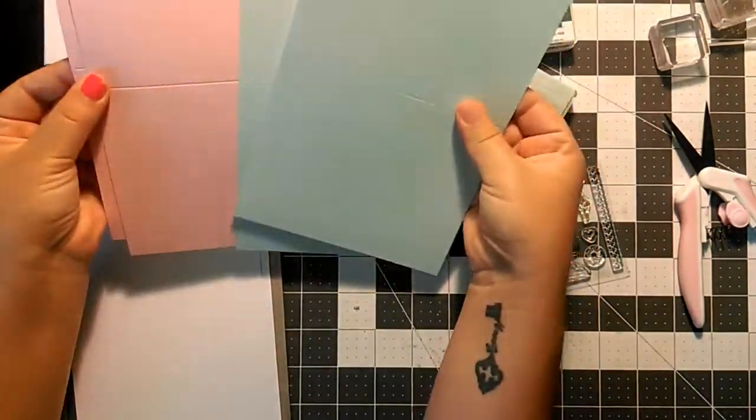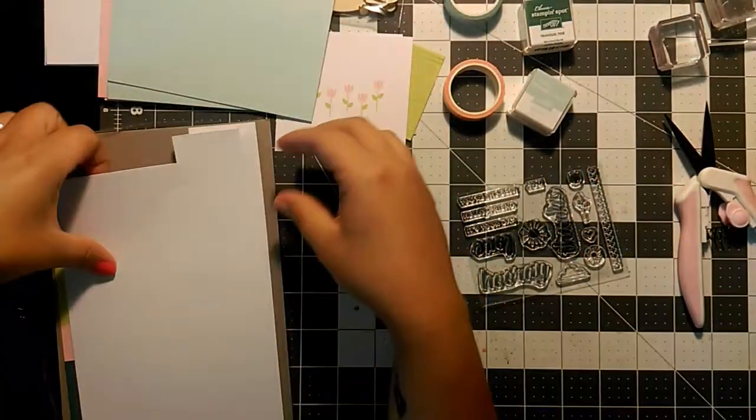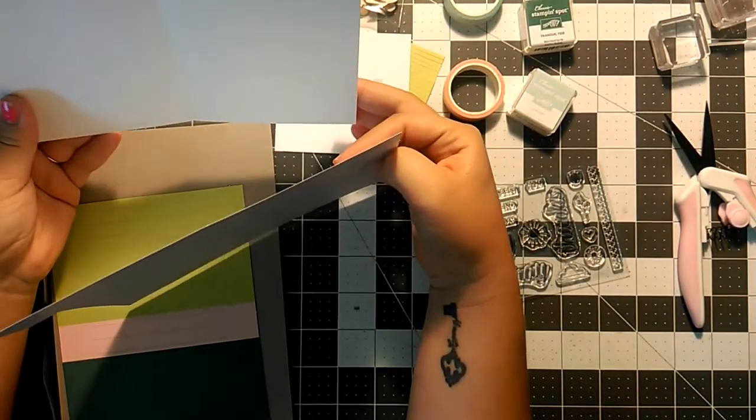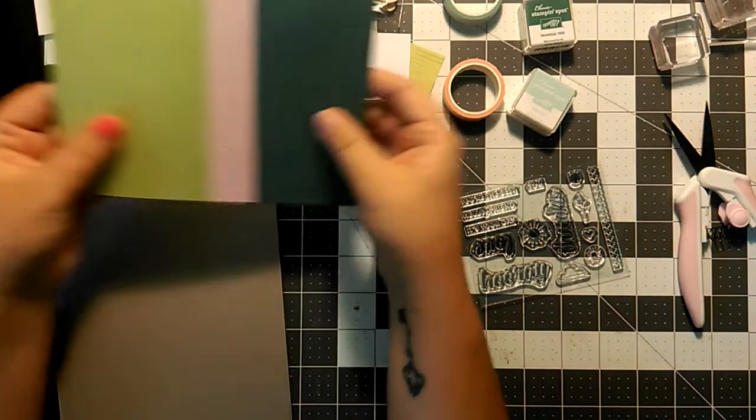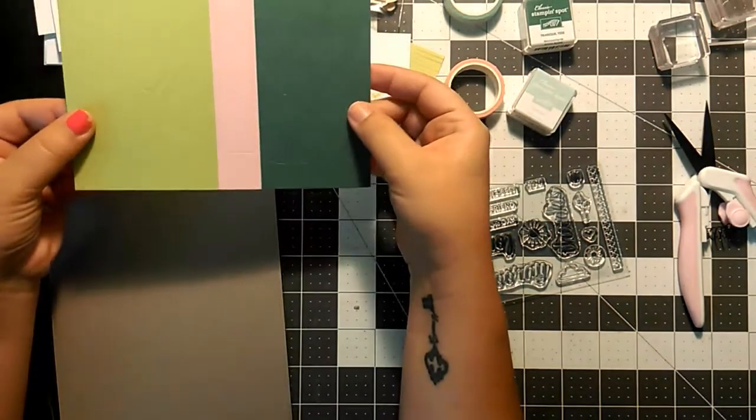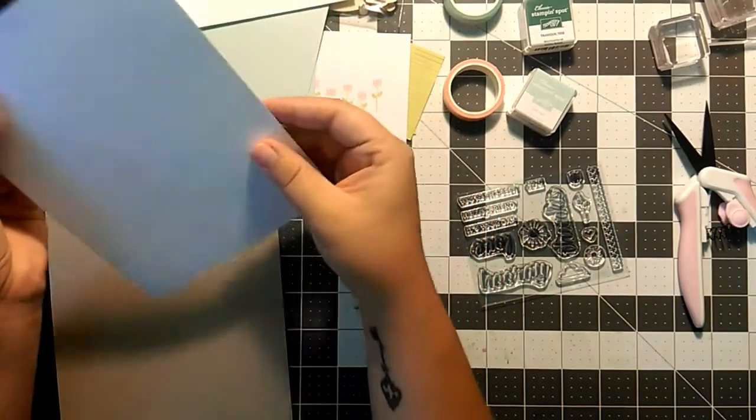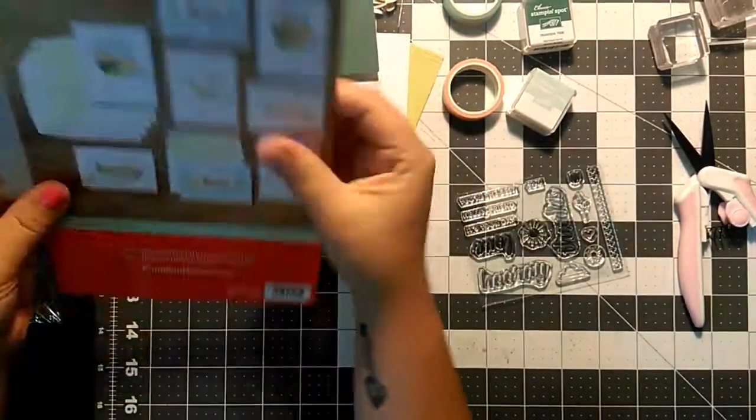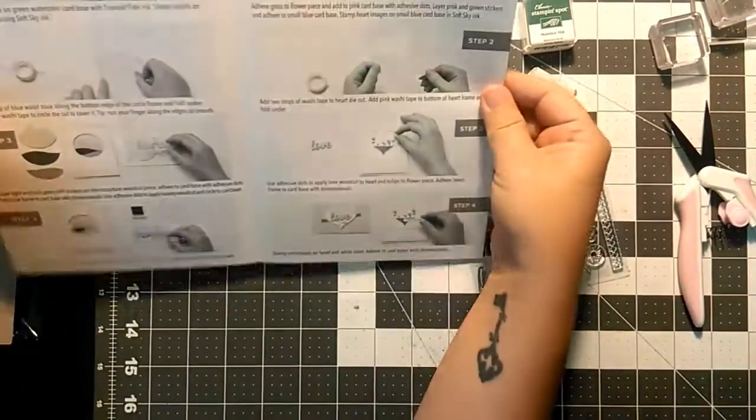These are the larger size cards and a little heart and circle punch-outs. Some little punch-outs here, and I believe these are stickers. And of course, you always get a set of instructions with every kit.